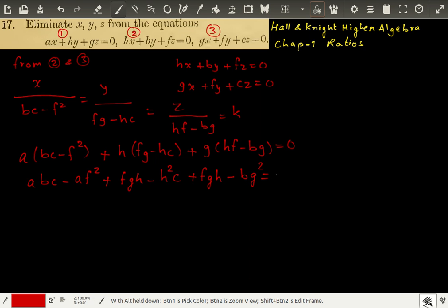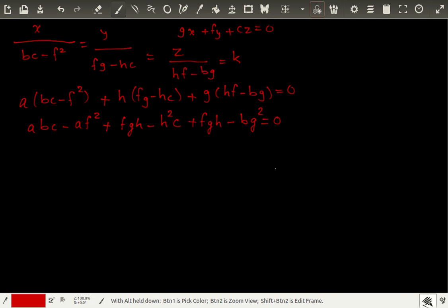So, what we have is abc plus fgh plus fgh is 2fgh, minus f squared a, minus g squared b minus h squared c equals 0. So, this is the eliminant of these equations.